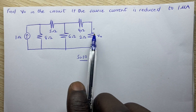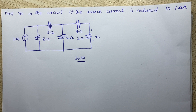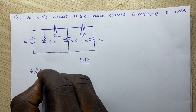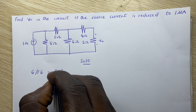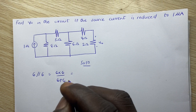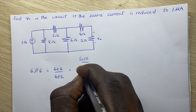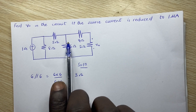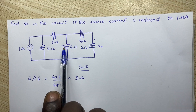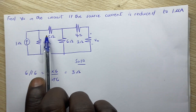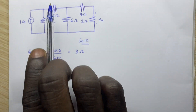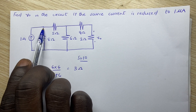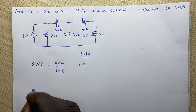We find the equivalent resistance. These two resistors are in series: 2 + 4 = 6 ohms. These two are in parallel: 6 in parallel with 6 gives us 6×6 divided by 6+6 = 36/12 = 3 ohms. These 3 ohms are in series with the 5 ohm resistor, giving us 8 ohms. We can now apply the current divider to find the current through that branch.